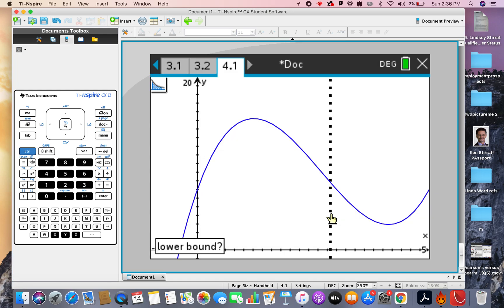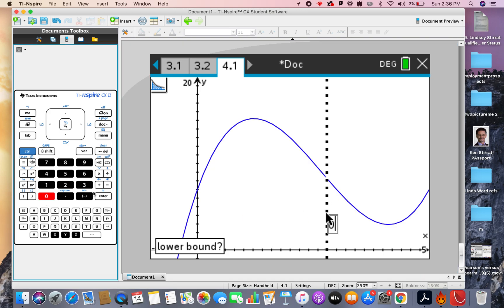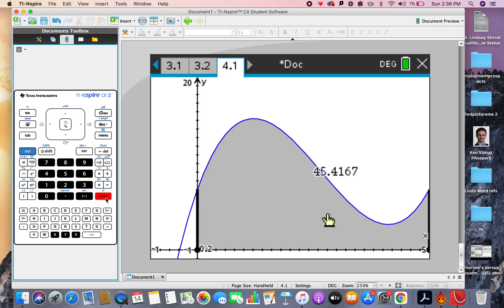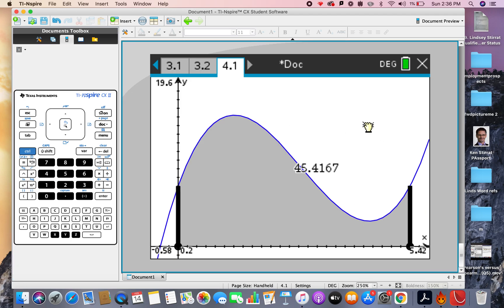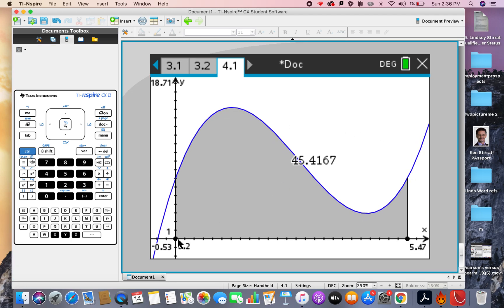Now it wants you to type in the lower bound, now I'm just going to literally type in 0, and press enter, and I'm going to type in the upper bound is 5, enter. Because that is indeed what the Hypatia's garden was, right? So from 0 to 5 here, and the area here is 45.42, that's the two decimal places.